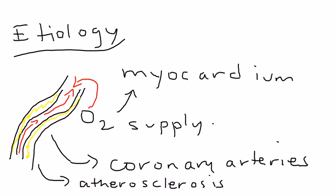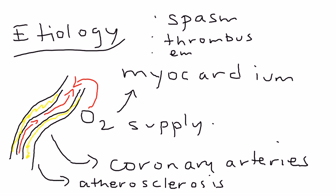The narrowing of these coronary arteries is not the only reason this can happen. It can also happen because of a coronary artery spasm, or because of a blood clot. The technical term for a blood clot is a thrombus, and if a blood clot moves, it's then known as an embolus. These are other reasons why you can get blockage of these coronary arteries — a fundamental aspect of heart disease.